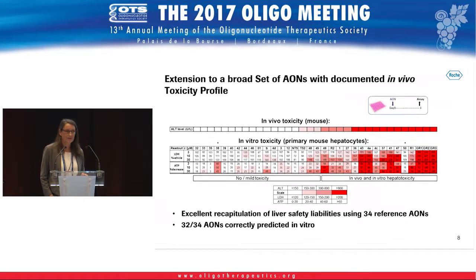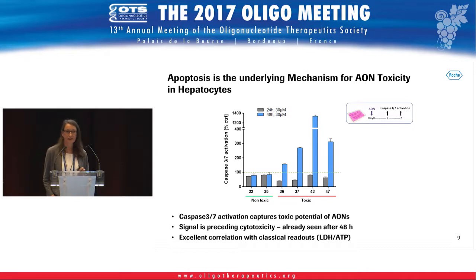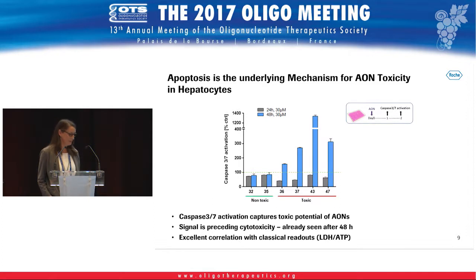We were next interested in the mechanism — what is the preceding event for the cytotoxicity. To address that we looked for caspase 3/7 activation to record apoptosis, and again with our test set of seven compounds we saw no effect of the safe ones but a very nice effect with the toxic ones, and that occurs prior to the cytotoxicity that we see.